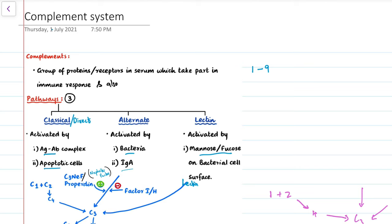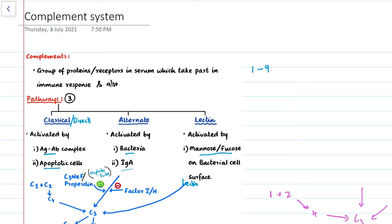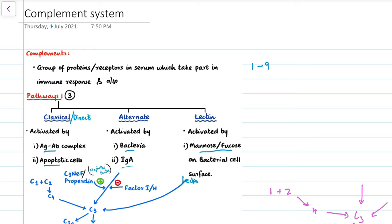Hi everyone and welcome back to my channel. Today we will be discussing the complement system. Complements are actually synthesized by the liver, and these are proteins, a group of proteins which act as receptors and are present in the serum. They take part in immune responses and also in inflammation.